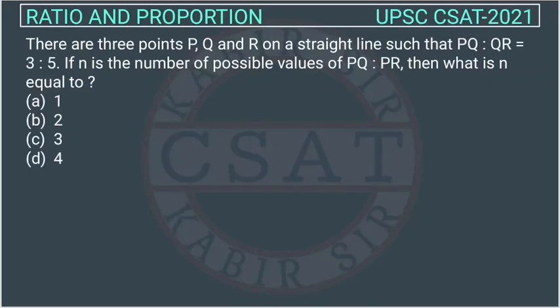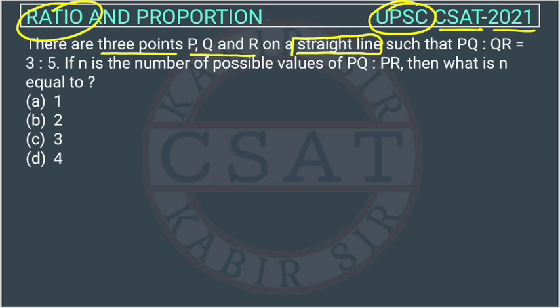This is the question of ratio and proportion asked by UPSC in CSAT paper of 2021. There are three points P, Q and R on a straight line. This is important.